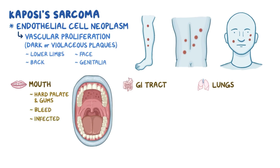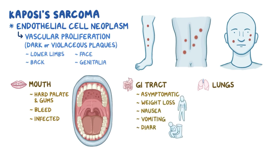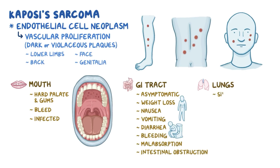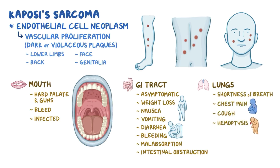Involvement of the GI tract can be asymptomatic, or it can cause weight loss, nausea, vomiting, diarrhea, bleeding, malabsorption, or intestinal obstruction. When the lungs are involved, that can cause shortness of breath, chest pain, cough, and hemoptysis, which means coughing up blood.